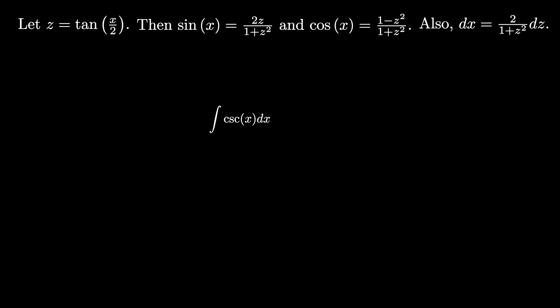Suppose we wanted to find the integral of cosecant x dx, not using the standard technique. We can remember that the cosecant of x is 1 divided by the sine of x. Then when we apply the Weierstrass substitution, we get that this is equal to the integral of 1 plus z squared over 2z times 2 over 1 plus z squared dz.